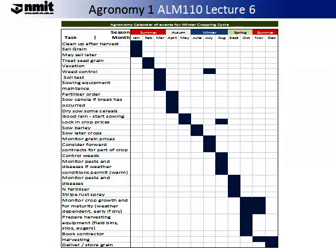The following is a Gantt chart that I have compiled to summarise the agronomical calendar of events for winter cropping. As you can see, this calendar starts in summer and goes through autumn, winter, spring to the following summer. Each month or months that are shaded in blue represent the timing for that particular management task. Take your time to familiarise yourself with the many management tasks that are required and how they fit in through the season.